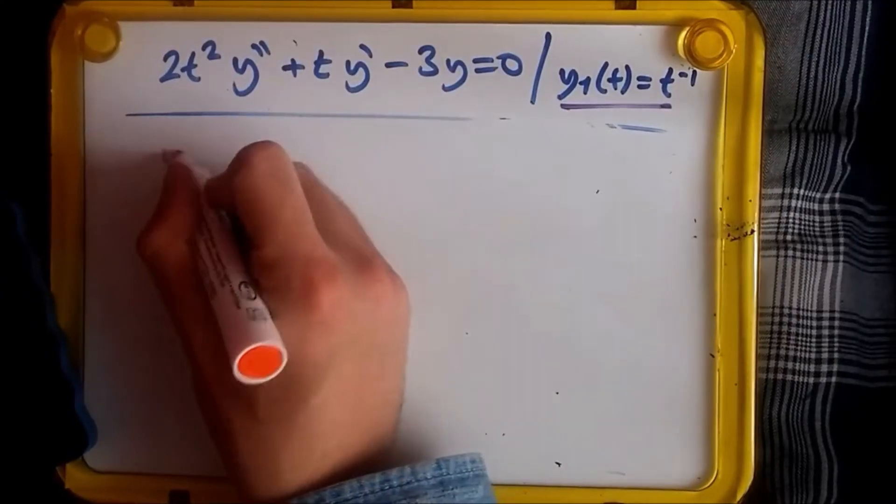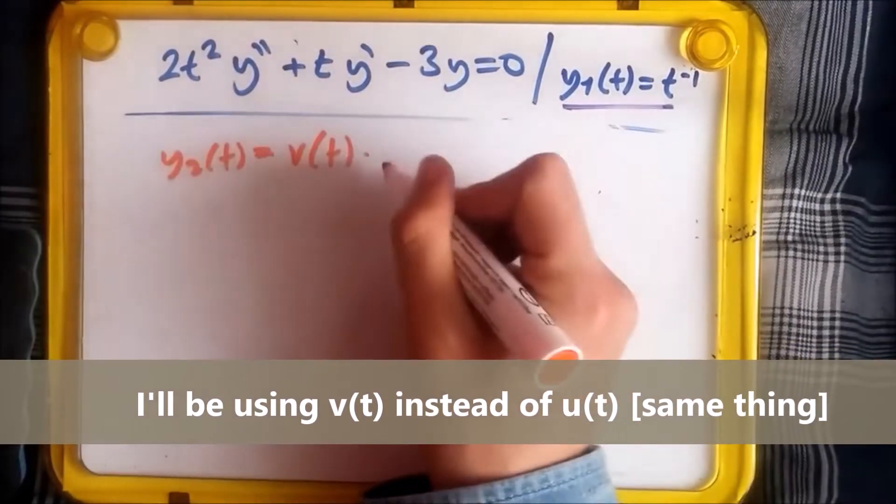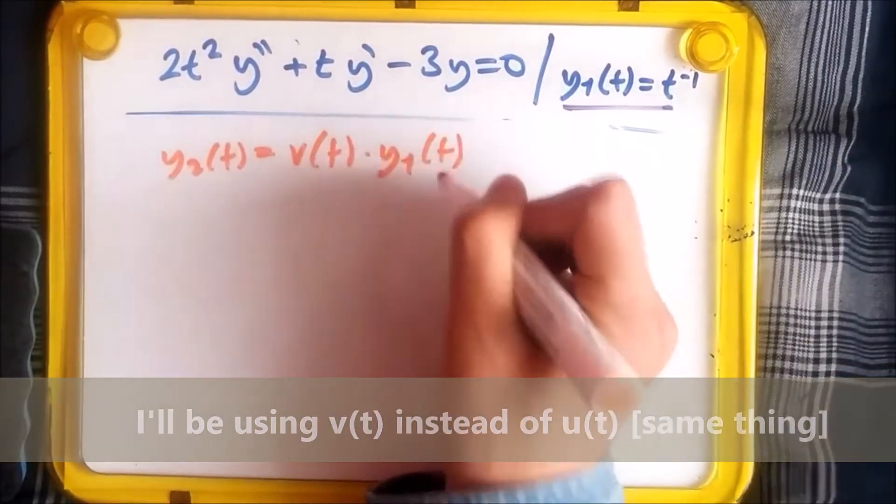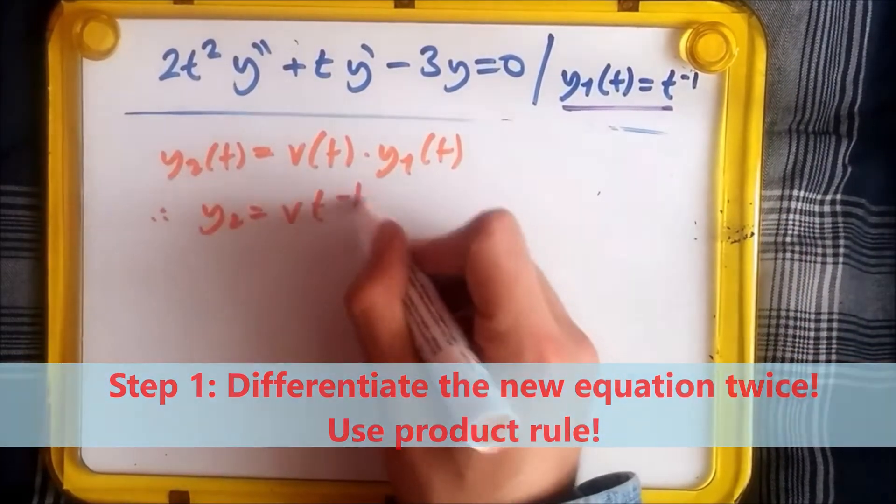We start with y2 because that's what we want. We're going to use the new variable v times the previous solution y1. So y2 equals v times t to the power minus one.